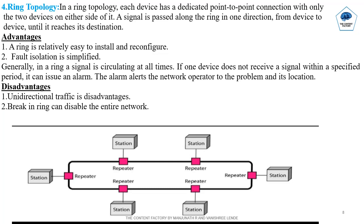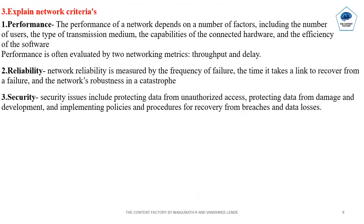Disadvantages of Ring Topology: Unidirectional traffic is a disadvantage, meaning a signal is passed along the ring in one direction only. Breaks in a ring can disable the entire network — if the ring is damaged, the signal cannot pass through any device and the whole system is affected.